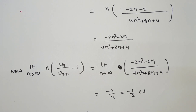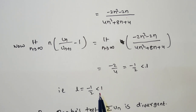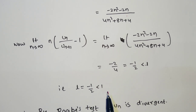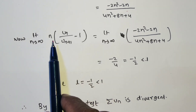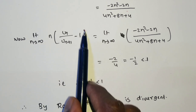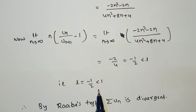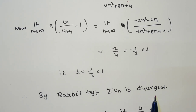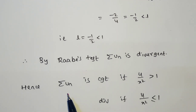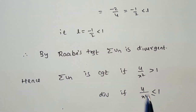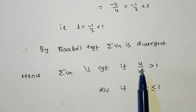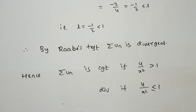So L = −1/2, which is less than 1. In Raabe's test, if L < 1 the series is divergent. Therefore, the final conclusion is: the series is convergent when 4/x² > 1, divergent when 4/x² < 1, and also divergent when 4/x² = 1 (i.e., x² = 4). This completes the Raabe's test analysis.